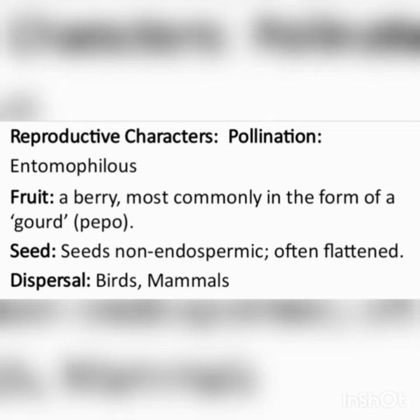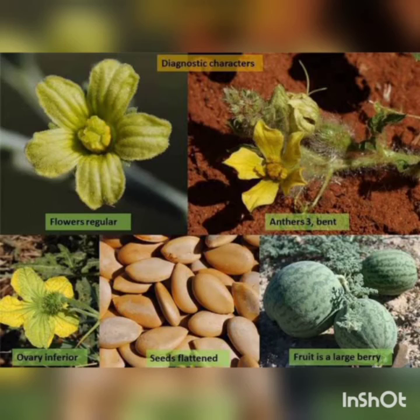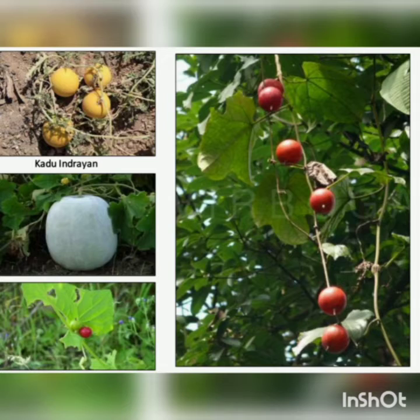Pollination is entomophilous. A berry type of fruit is present, most commonly in the form of a gourd. Seeds are non-endospermic, often flattened. Dispersal of seeds is by birds and mammals. Diagnostic characters: herbaceous climbers with tendrils, bicollateral vascular bundles, leaves usually lobed with multicosted venation, flowers unisexual and epigynous, stamens five in synandrous condition, ovary inferior and placentation is parietal. These pictures show diagnostic characters of Cucurbitaceae.